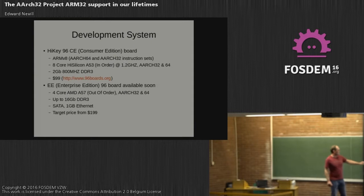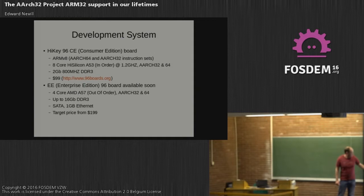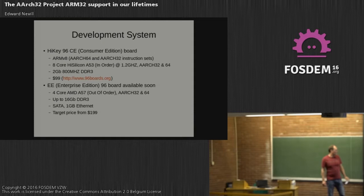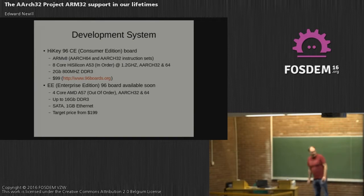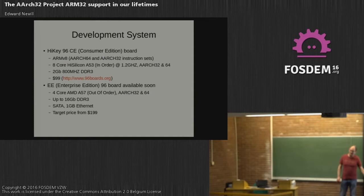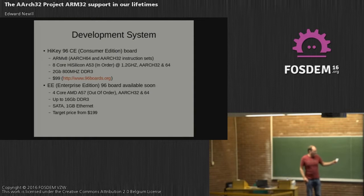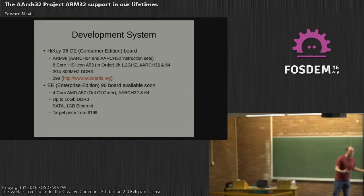The enterprise edition, available really soon, is a 4-core out-of-order processor, as opposed to the consumer edition which is in-order. It has up to 16GB DDR, SATA, and 1GB Ethernet, with a target price of $99. The consumer edition is a bit limited with 2GB of memory and without SATA and Ethernet. I'd like to point out that Linaro makes no money from the sale of these boards — we're not plugging the boards for profit.